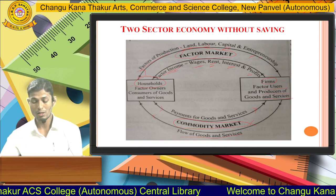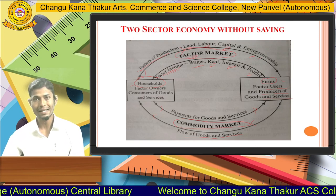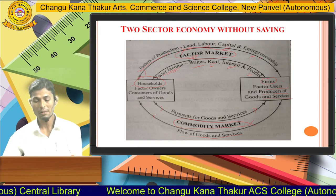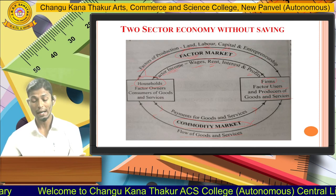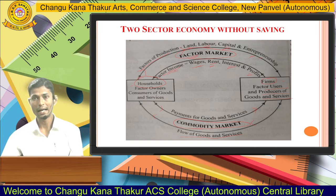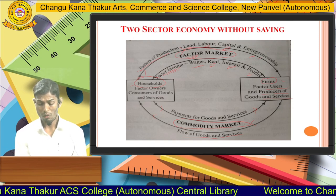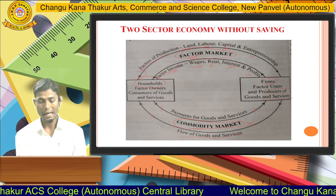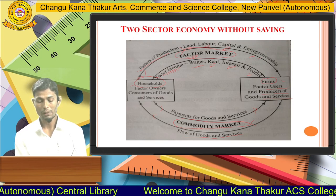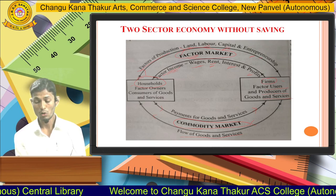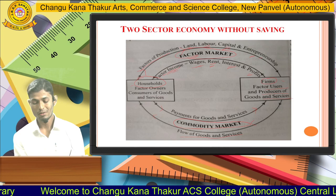In the factor market, the transaction involves raw inputs — that is, inputs or factors of production. But in the commodity market, it is the transaction of finalized goods that can be used directly without any further processing. The flow of goods and services goes towards the households, and in return, households make payments to firms according to the prices of goods and services.